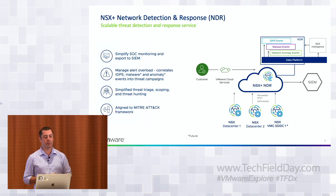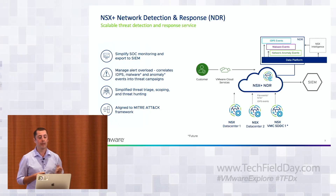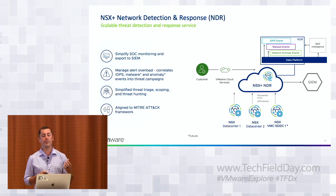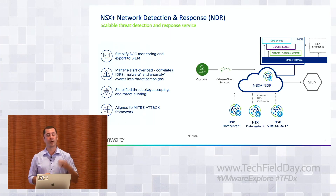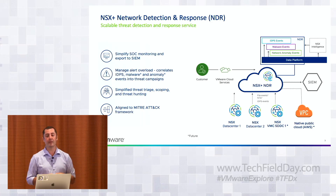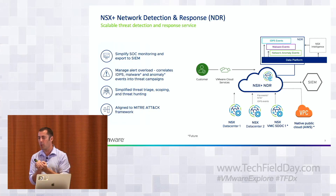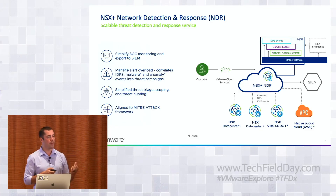Everything we do with NSX Plus NDR is aligned with the MITRE ATT&CK framework. At the initial release, what is available is the correlation of IDPS events from our distributed and gateway IDPS. In a future release, we'll be adding anomaly events from NTA and malware events into the campaign correlation framework. Currently this is for on-prem data centers; VMC is coming in the next release, and beyond that we're adding public cloud sensors deployable in a VPC or on-premises for non-NSX workloads.